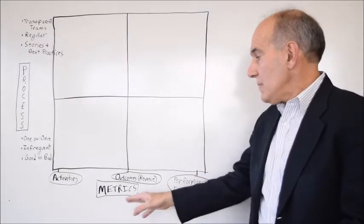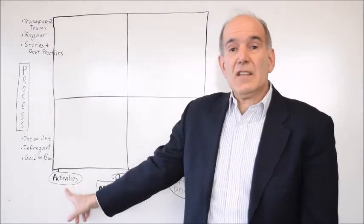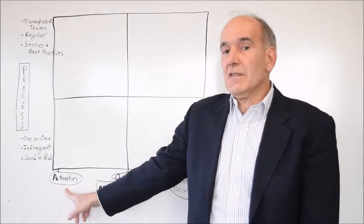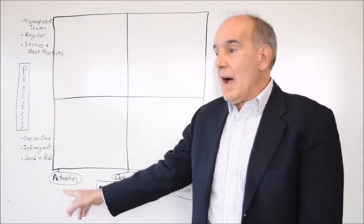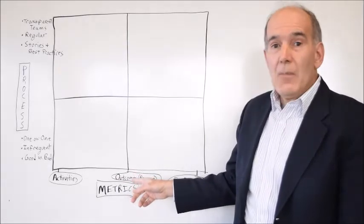So let's look at metrics first. Typically, people are measuring activities, often field officer visits in the fiscal year. Everybody measures those. Another common measure is the outcome or the revenue.